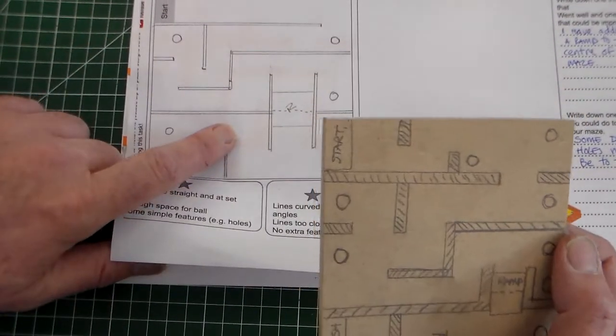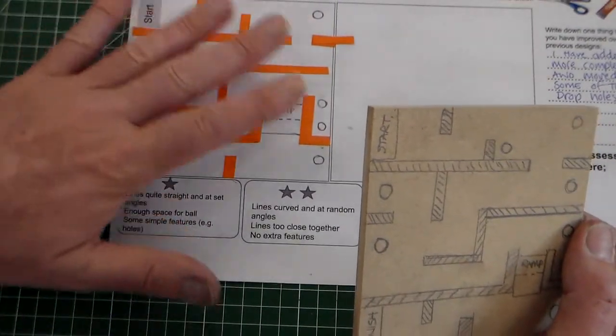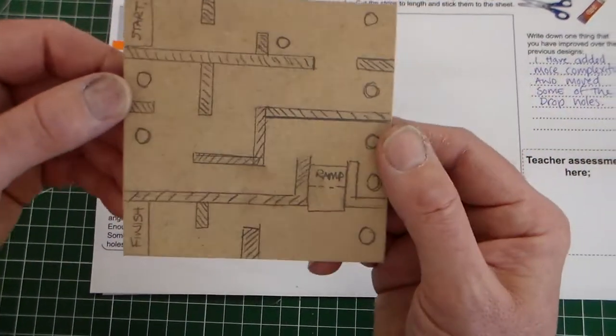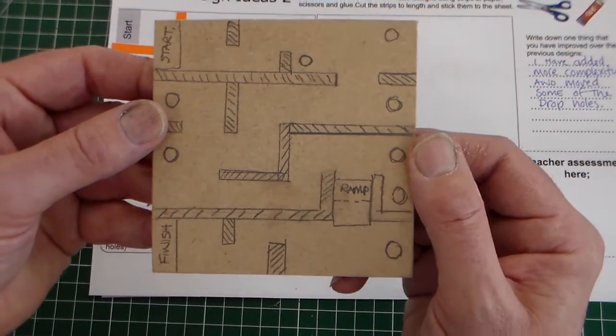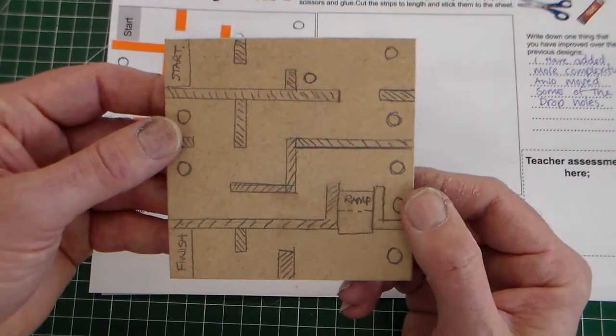So we've got the three stages. We've got the drawn stage. We've got the stage with the card strips where we're modeling it. We've evaluated it. And here's our design ready to go. So for the next stage here we'll be sticking on the strips and drilling the drop holes.